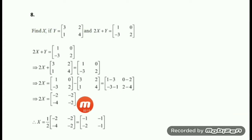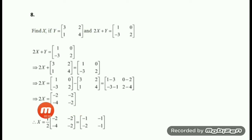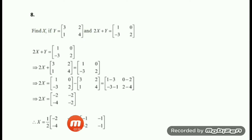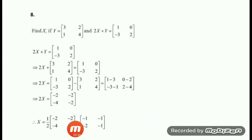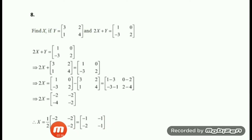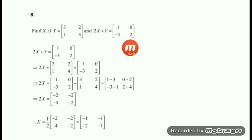Doing the calculation: 2X equals [-2, -2; -4, -2]. After this, bring the 2 to the right side — since it is a product on the left, it becomes division on the right. So X will be equal to one-half times this matrix. Do the scalar multiplication: multiply each element by half. That gives [-1, -1; -2, -1]. So this is the value of X.